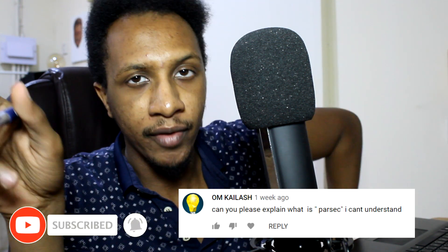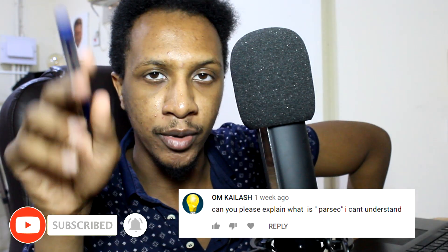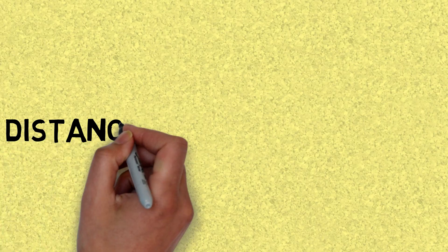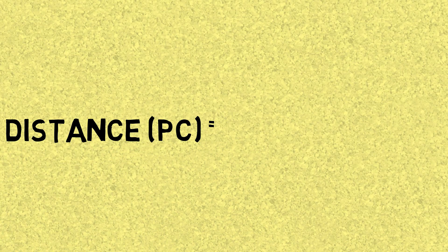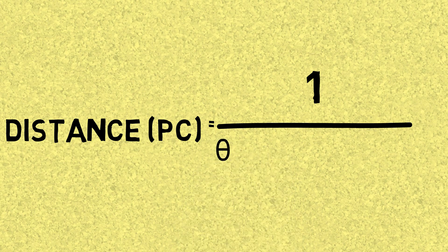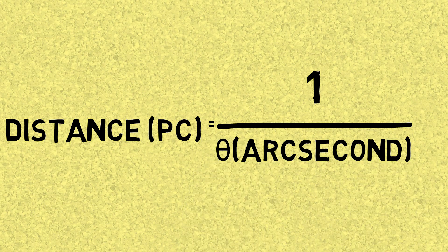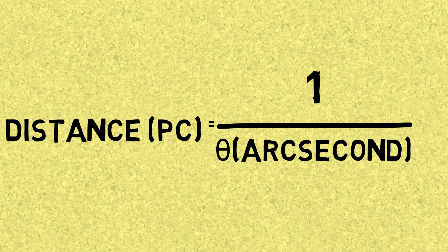Welcome back everyone. Today we are going to explain what is a parsec. It's going to be very simple and I promise you will understand it. First of all, the formula for a parsec looks like this, and it is a unit used to measure distances that are very far — kind of like the distance to a star. We use things like a parsec because we don't want to bother with small units and have to write a number that's this big.